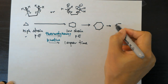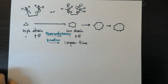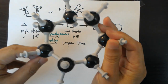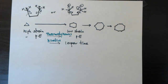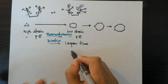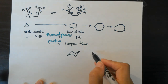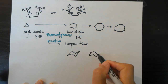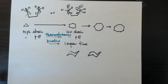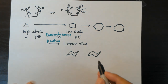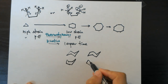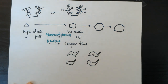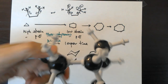For a seven-membered ring you can draw it with a chair-like form, somewhat like half of the six-membered chair but extended, and there are different conformations for the seven-membered ring. You can draw various conformations for the eight-membered ring as well.